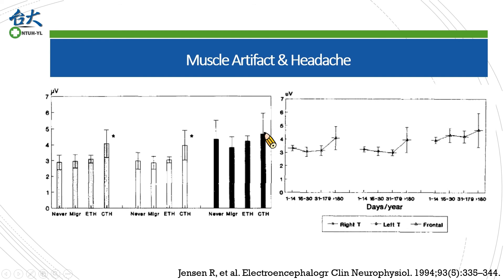When we talk about muscle artifacts, there was a question I had since I learned to read EEG. In our hospital, we usually order an EEG for patients complaining of headache if it does not look serious. Of course, 9 out of 10 EEGs were normal, and some may contain muscle artifacts, which we may regard as scalp muscle spasm. In 1994, Jensen performed a study comparing different kinds of headaches and their surface EMG from EEG. It seems only chronic tension-type headaches would have prominent muscle artifacts, while episodic tension headaches and migraines did not. In addition, the headache frequency must reach more than 180 days per year to show more prominent artifacts. Generally speaking, EEG muscle artifacts are not very useful unless the headache is very severe.